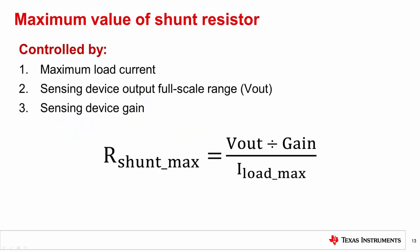Increasing the shunt resistor gives us better accuracy, but there is an upper bound for the shunt resistor value. Maximum resistor value in an application depends on these factors: maximum load current to be measured, the full-scale output range of the sensing device or the full-scale input range of the circuitry after the device, and the gain of the sensing device.